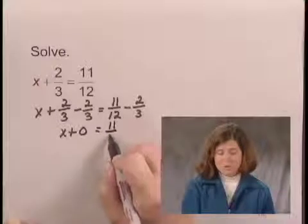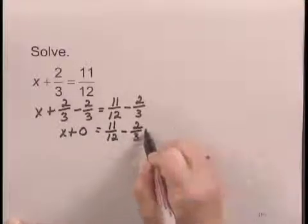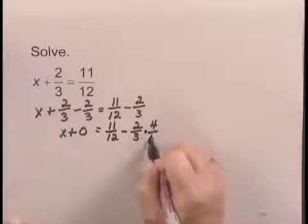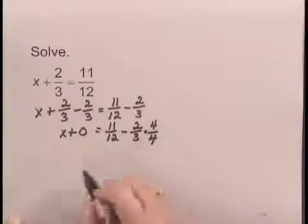So I write 11/12 minus 2/3 times 4 over 4, so that I can write 2/3 with a denominator of 12. On the left side, x plus 0 is x.